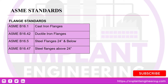Here are a few ASME standards. The first are flange standards. ASME B16.1 indicates cast iron flanges. ASME B16.42 is used for the designing and construction of ductile iron flanges. ASME B16.5 covers steel flanges up to 24 inches diameter. ASME B16.47 is used for the designing and construction of steel flanges above 24 inches diameter.